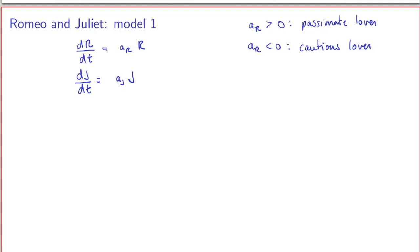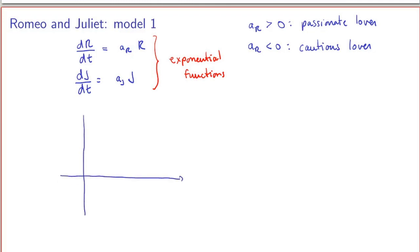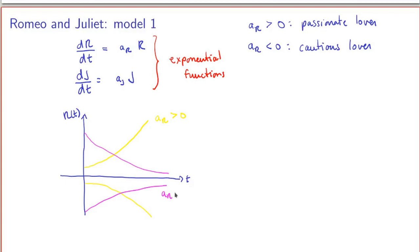We can do more, because these are very simple separable first-order equations that we know how to solve, and the solutions are going to be exponential functions. If we sketch the graph of Romeo's love as a function of time, depending on the initial conditions, either it keeps increasing forever or decreasing forever if the coefficient is positive — that's the passionate lover case — or it decreases to zero if the coefficient is negative, the cautious lover case. We get exactly the same thing for Juliet, since the two equations are identical in form.